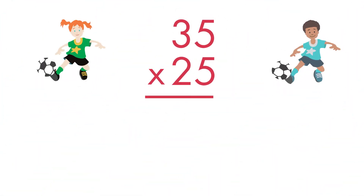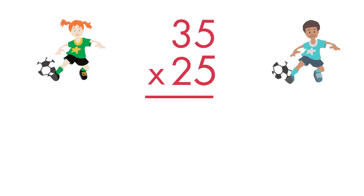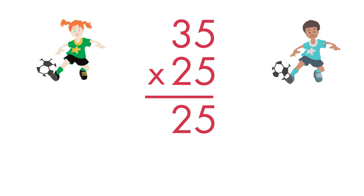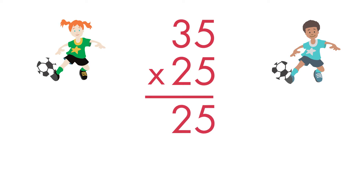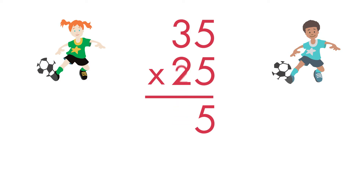First, multiply 5 ones by 5. 5 times 5 is equal to 25. 25 has 2 tens and 5 ones. Write 5 in the ones place. Write 2 in the tens place above the 3.